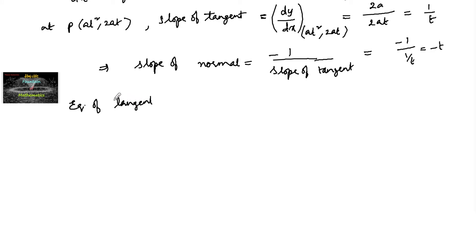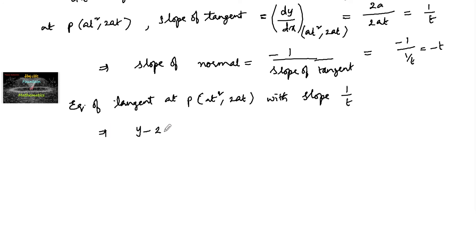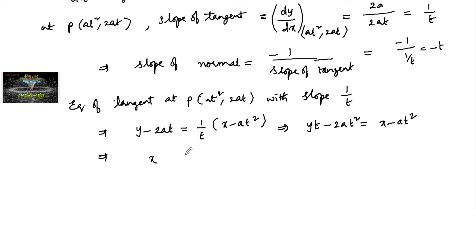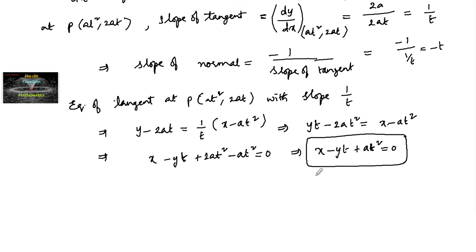Equation of tangent to the curve at point P (at², 2at) with slope 1/t: y − 2at = (1/t)(x − at²). By cross multiplication: yt − 2at² = x − at². Rearranging: x − yt + at² − at² + 2at² − at² = 0, which gives x − yt + at² = 0, or equivalently x = yt − at². This is the equation of the tangent.